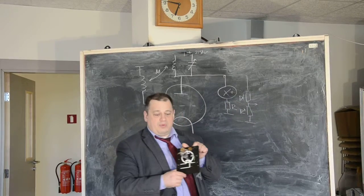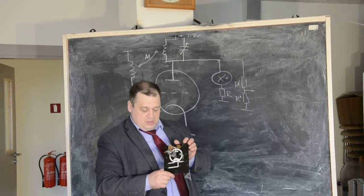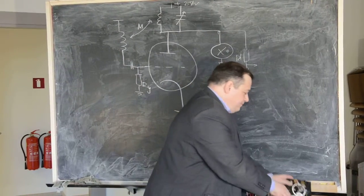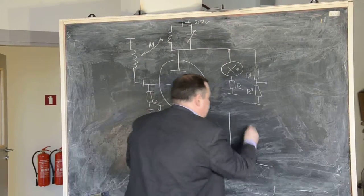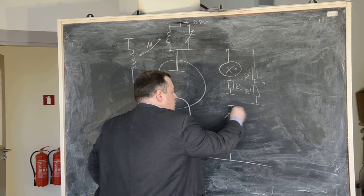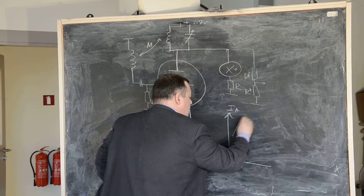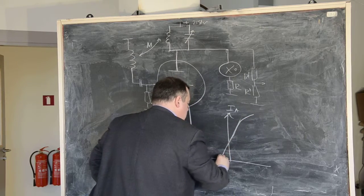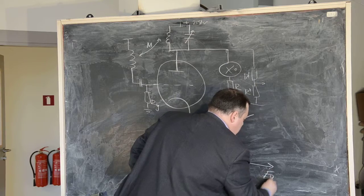This lamp, or valve, that is mounted on the desk, it has a characteristic. Something like anode current, something like this, as a function of grid voltage.